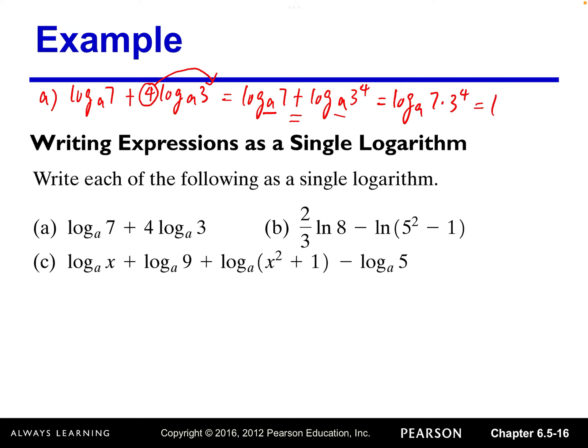And then we simplify: seven times three to the fourth power — three to the fourth is 81, seven times 81 is 567. That's how to write the sum of two logs as a single log.